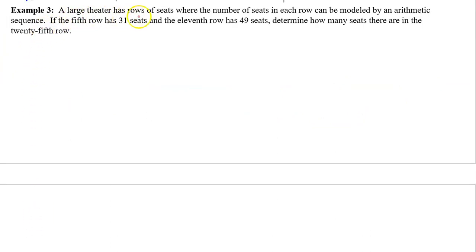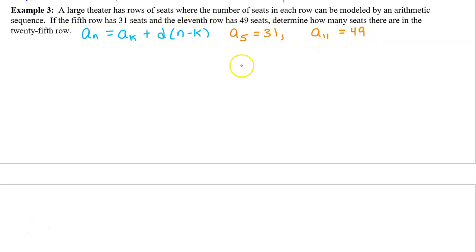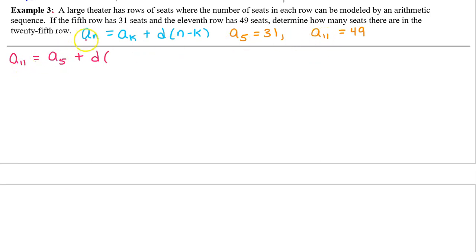Example 3. A large theater has rows of seats where the number of seats in each row can be modeled by an arithmetic sequence. If the 5th row has 31 seats and the 11th row has 49 seats, determine how many seats are in the 25th row. In Topic 2.1, we learned that an arithmetic sequence can be modeled by an equals ak plus d times n minus k, where an is the nth term, ak is term k, and d is the common difference. So a5 equals 31 and a11 equals 49. We use these two terms to find d, putting a11 in for an and a5 in for ak — always put the larger index in front as an.